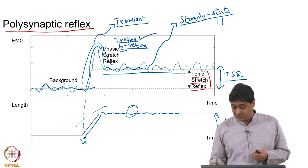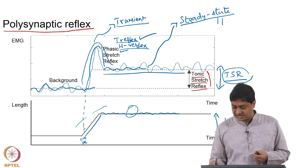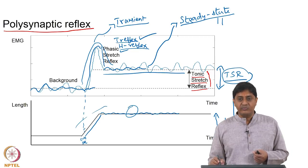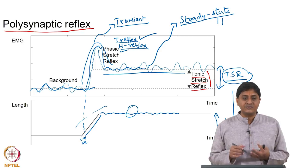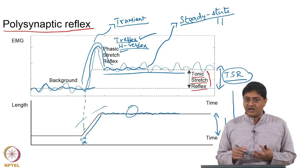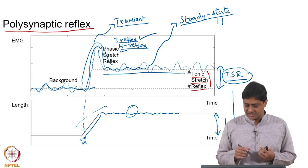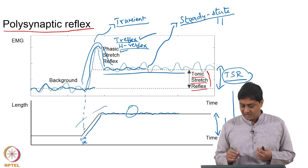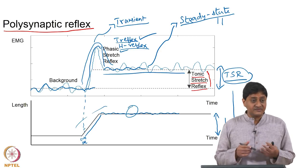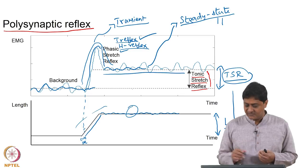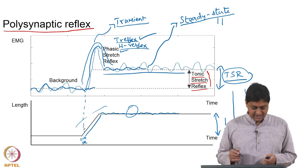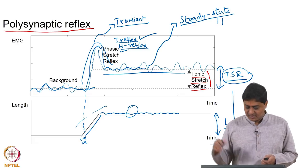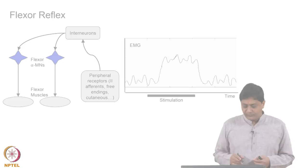It turns out that the characteristics of the tonic stretch reflex can have important consequences for movement generation. How this varies will be discussed in the next few slides or in the next class.